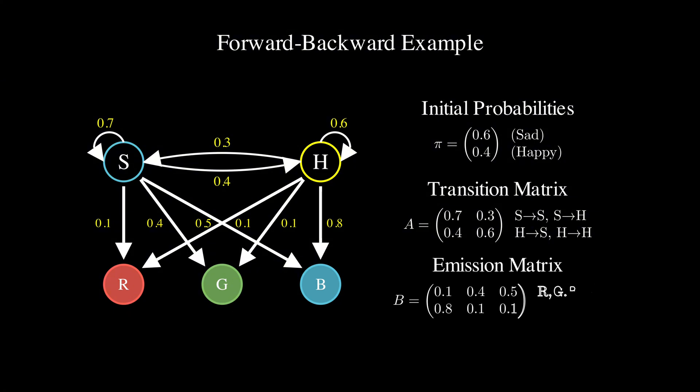The emission matrix B shows us the probabilities of observing different hat colors given each mood state. If someone is sad, there is only a 0.1 chance they'll wear red, a 0.4 chance of green, and a 0.5 chance of blue. But if they are happy, there is a 0.8 chance of red, and only 0.1 for both green and blue.